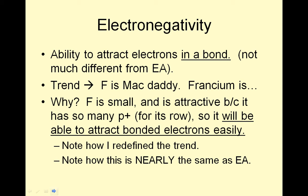Electronegativity is the ability to attract electrons in a bond. We got rid of electron affinity, so don't worry about it. The trend: fluorine is the mac daddy, francium is a big loser. So if you're trying to attract electrons, you don't want to lose electrons. Why is fluorine the mac daddy? Fluorine is small — it's on the top of the periodic table — and is attractive because there are so many protons for its row, so it can attract bonded electrons easily. Notice how I redefined the trend.